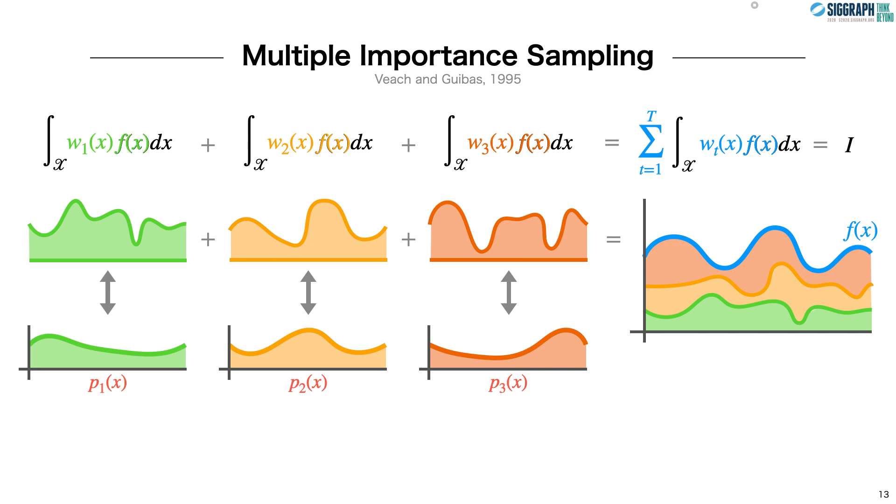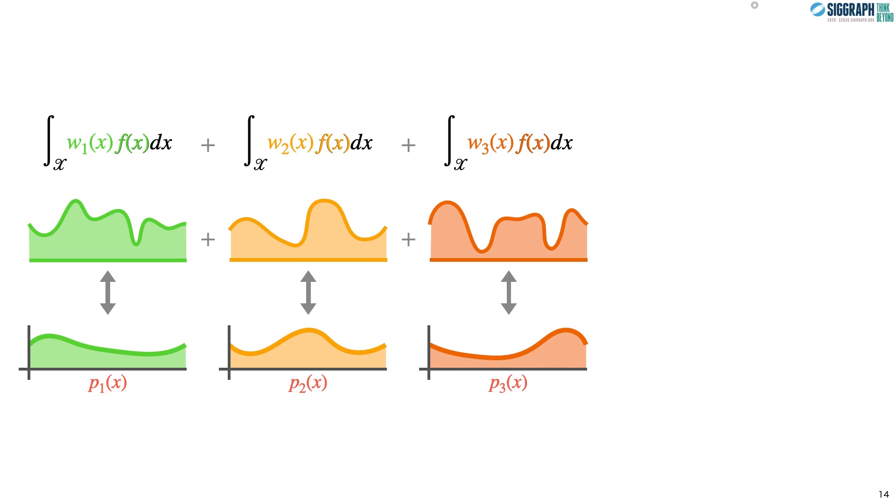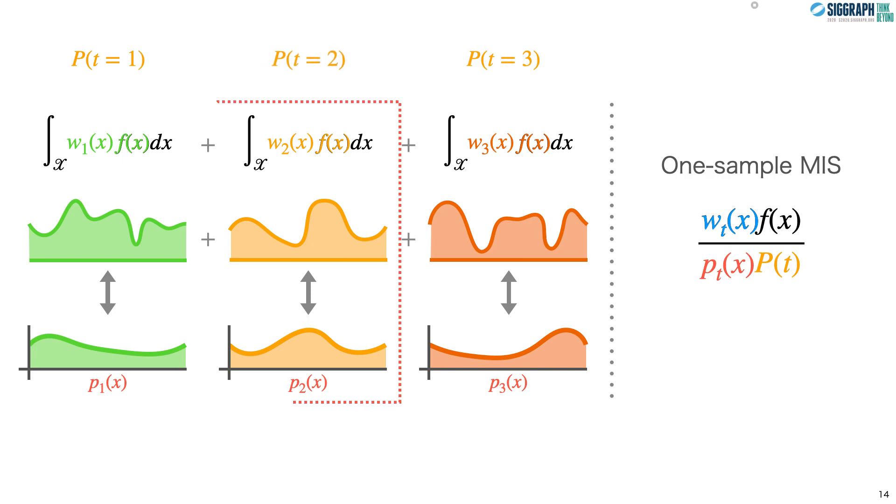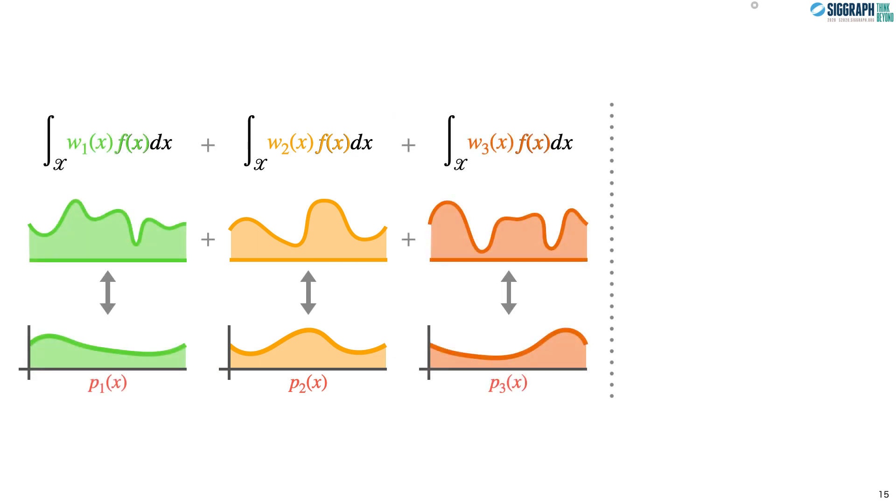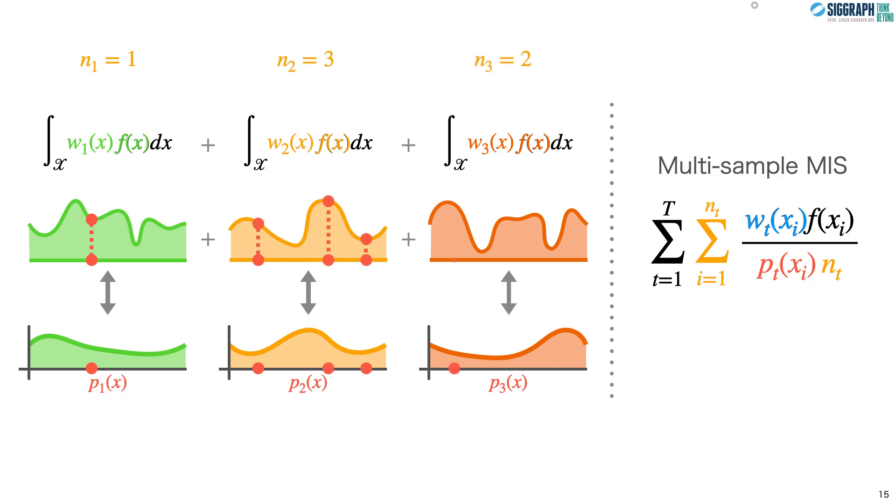One sample MIS estimates the integral by randomly selecting a technique and a sample from its weighted integral. Each technique is assigned a probability of selection, and from the set of techniques we stochastically select one. From that technique we draw a sample and use it to make an estimate of the integral. In contrast, multi-sample MIS opts to estimate each weighted integral and sum them. From each technique, we choose one or more samples. For example, one from the first, three from the second, and maybe two from the last.